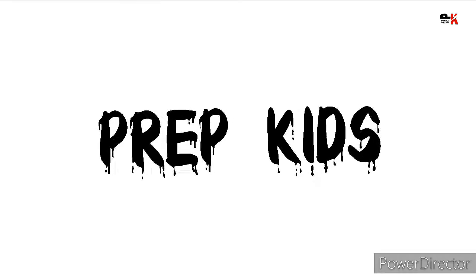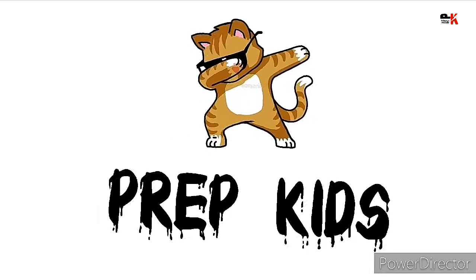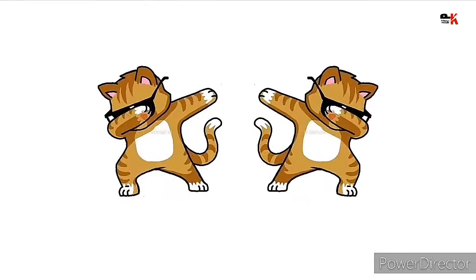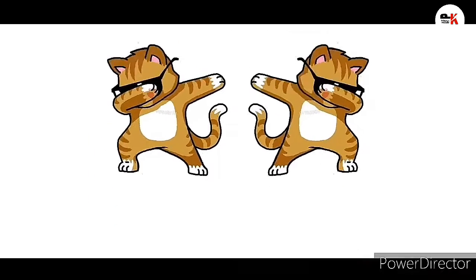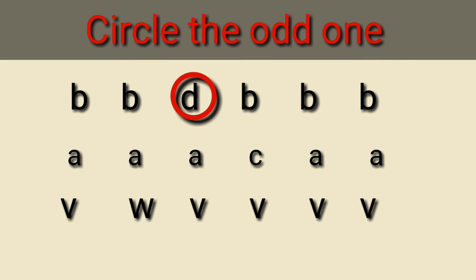Today I will give you some worksheets that can be done by your child, so let's get started. As you can see, I have completed circling the odd one out in the first line. This is for kids who have come from nursery or are currently in nursery.